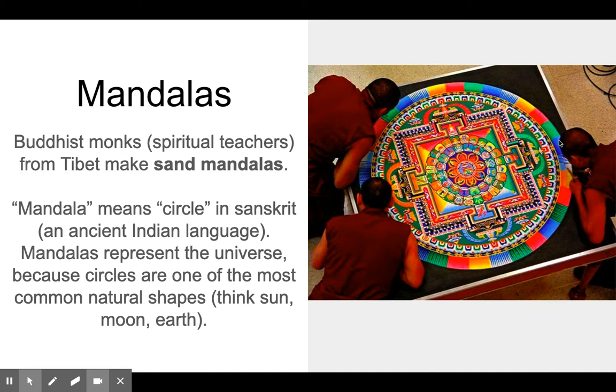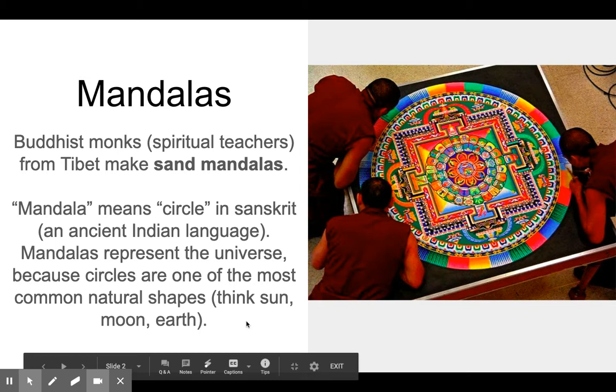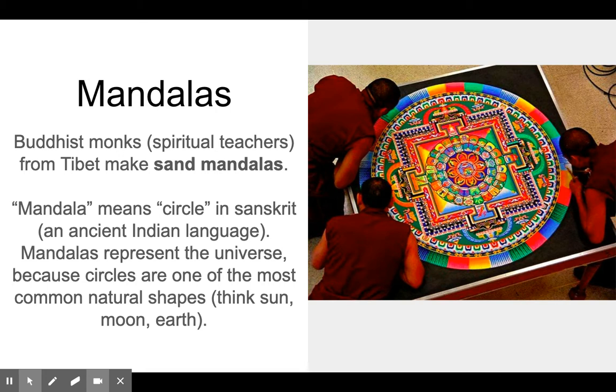The word mandala means circle in Sanskrit, an ancient Indian language. Mandalas represent the whole universe, because circles are one of the most common natural shapes, like the moon or the sun or the earth. Lots of things in our universe.